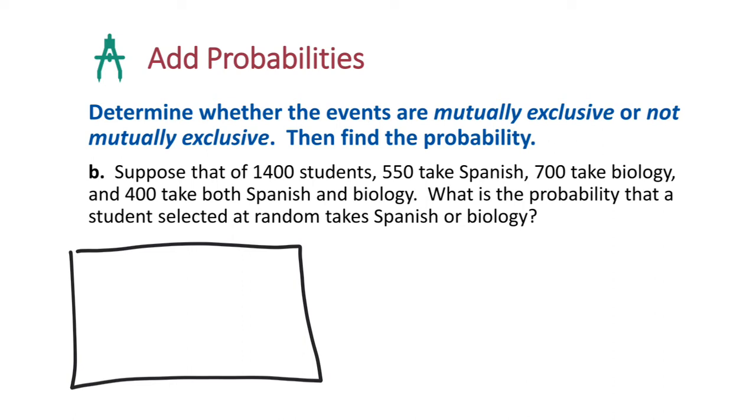So another example here, is it mutually exclusive or not? Find the probability. So suppose that 1,400 students, 550 take Spanish, 700 take biology, and 400 take both Spanish and biology. What is the probability that a student selected at random takes Spanish or biology?